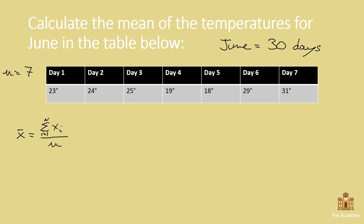Then, let's denote the x values so this is clear in your mind. Here, the variable is days — x is days. Therefore, x1 would be day 1, x2 would be day 2, and so on: x3, x4, x5, x6, x7.